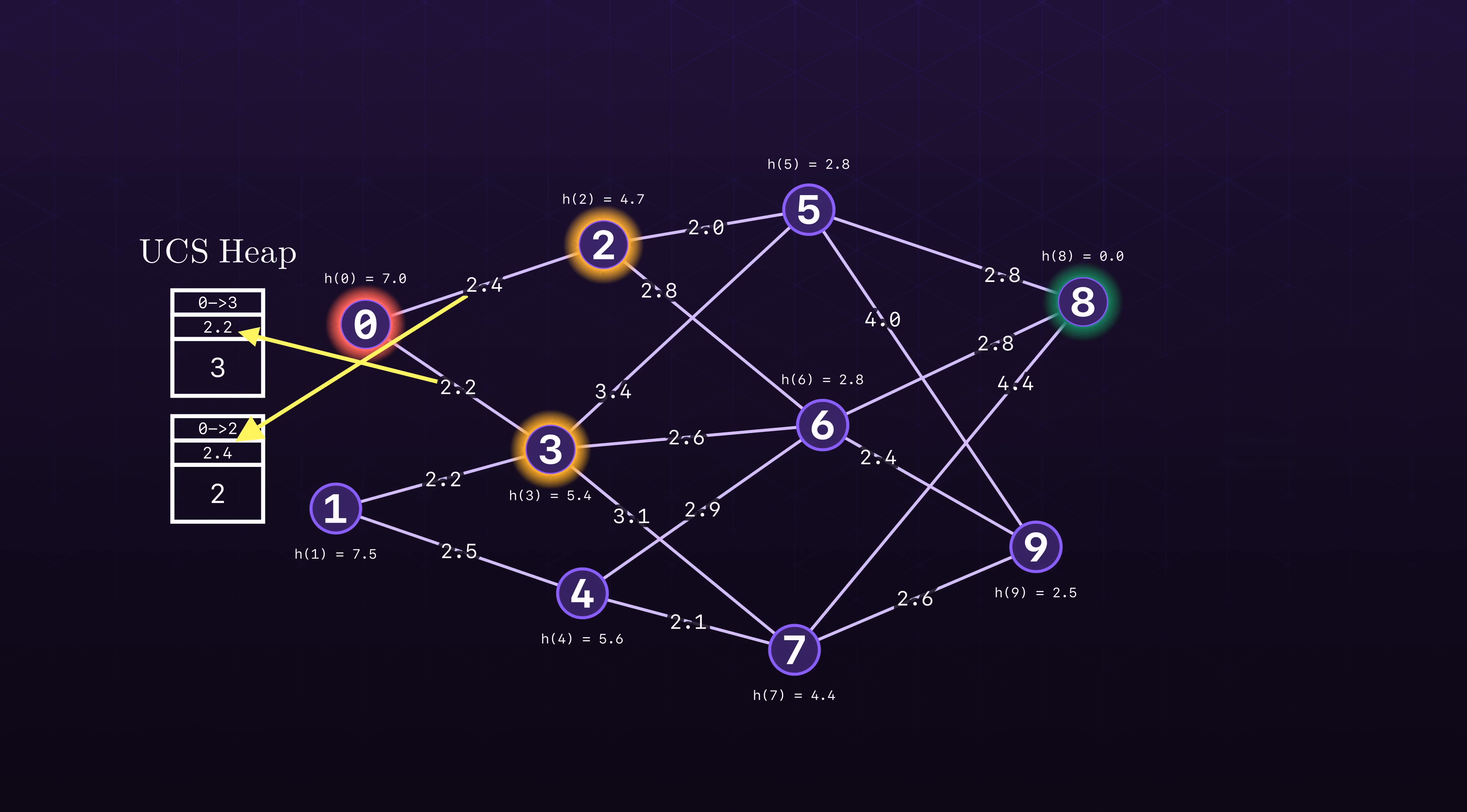We can still use a priority queue, but this time, instead of placing the node in the queue with the cost of arriving to the node, we instead add it with the estimate of how long it takes to get to the goal. This estimate can be something like the straight line path distance or, more formally, the Euclidean distance between nodes.